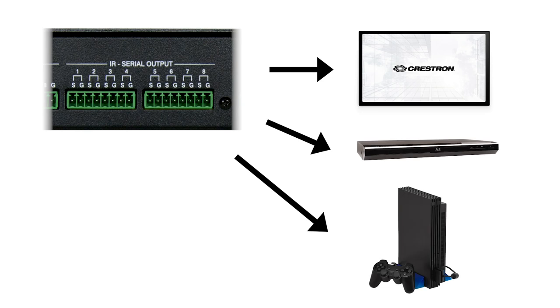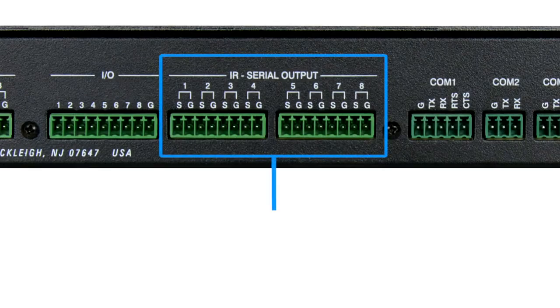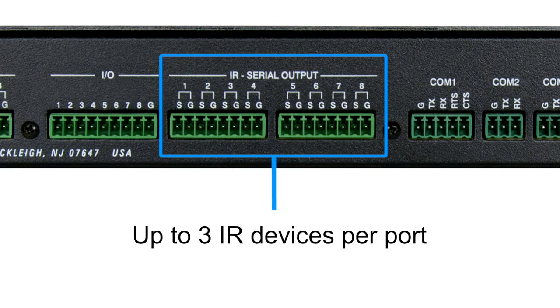If one room has a display, a Blu-ray player, and a games console, then all three devices can be operated from the same port, meaning the eight ports in the CP3 can actually control many more devices. Infrared does have the disadvantage of one-way communication only — the control processor has no way of knowing that a device received a command or that it's operating as expected. However, many consumer-level devices such as Blu-ray players or games consoles have no other method of control, and the user can easily see if the device is playing after a button is pressed.